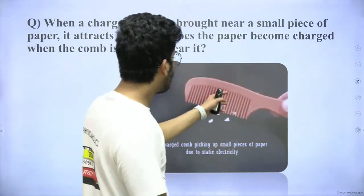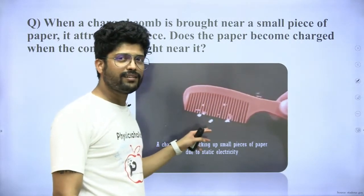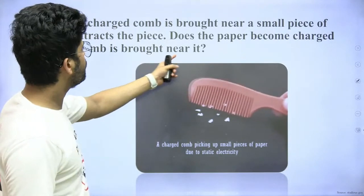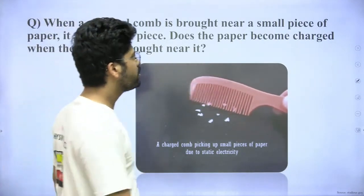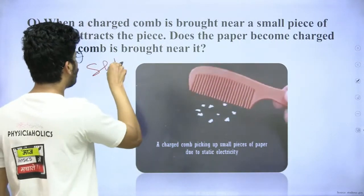So your comb is charged. However, these paper particles are neutral, so they attract. Does the paper become charged? No, paper is neutral. Paper is still neutral overall, paper is neutral.